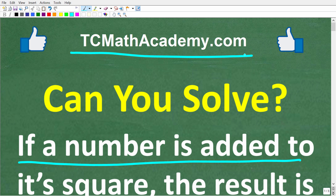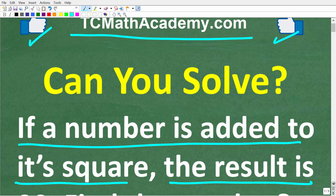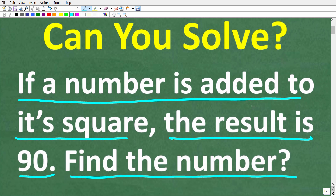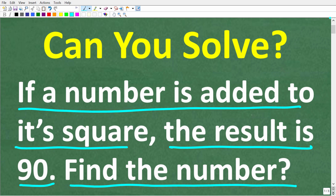You can find a link in the description below. If this video helps you out or if you just enjoy this content, make sure to like and subscribe. Once again, I am suggesting that you use algebra. The question is: if a number is added to its square, the result is 90. Find the number.